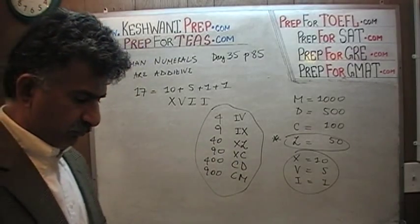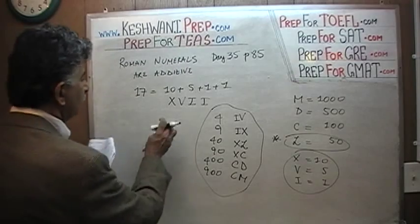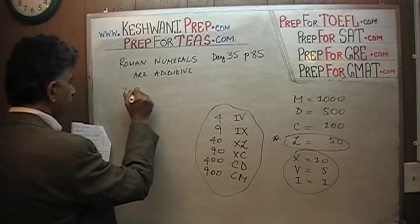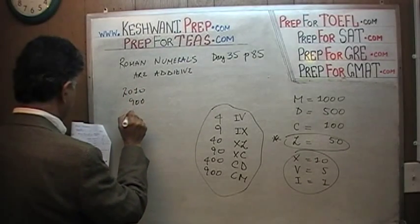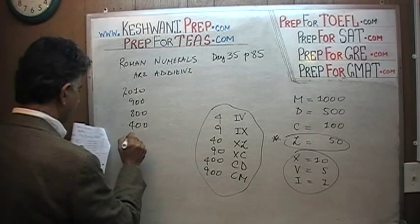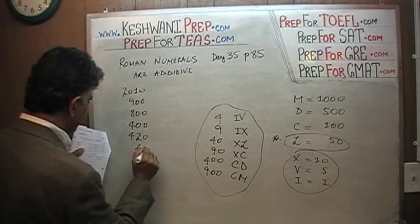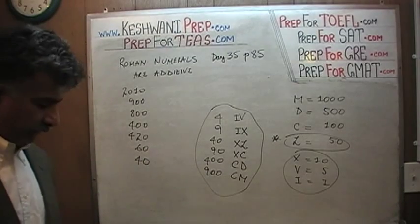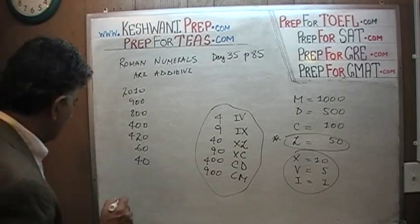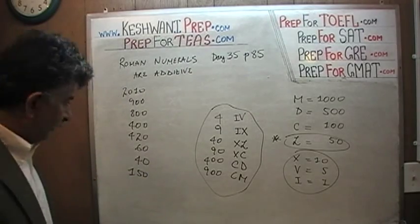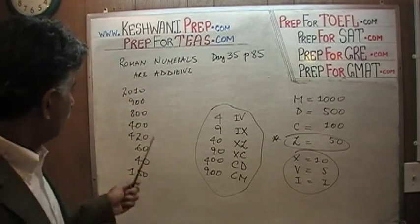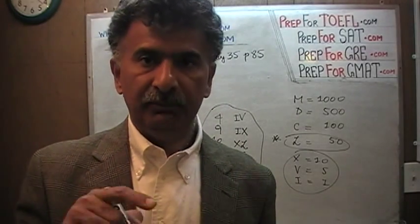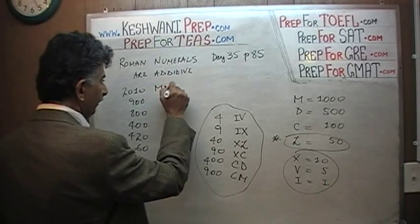Let's do a few more. Let's do 2010, 900, 800, 400, 420, 60, 40, and 150. See what you can do. How do we write 2010? A thousand plus a thousand plus a ten. 900 would simply be a thousand minus a hundred. 800 would be 500 — demi-mil — and then three more hundreds.